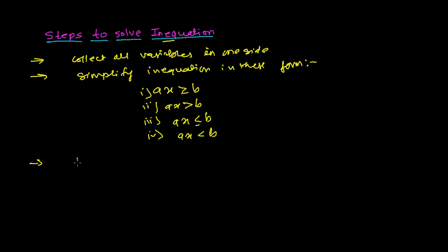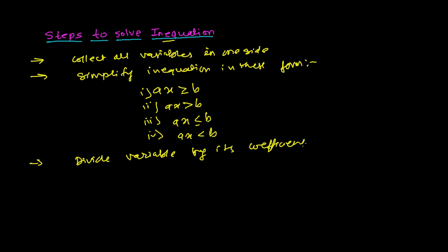The third rule is to divide the variable by its coefficient on both sides — left-hand side as well as right-hand side.